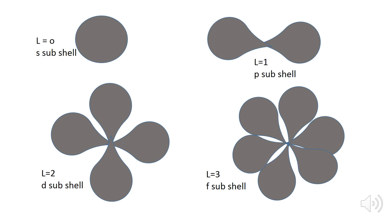The azimuthal quantum number defines the shapes of the orbitals. When l equals zero, it means the s orbital, which is spherical in shape. When l equals one, it means the p orbital, which is dumbbell-shaped having two lobes. When l equals two, it means the d orbital, which has a double-dumbbell shape. When l equals three, it means the f orbitals, which have a very complex shape.